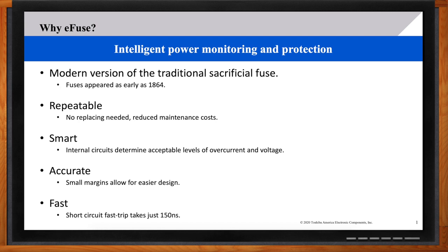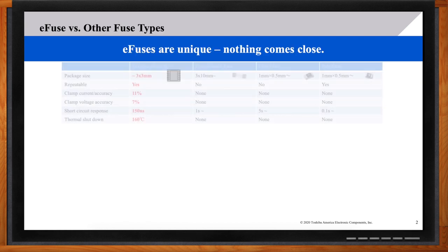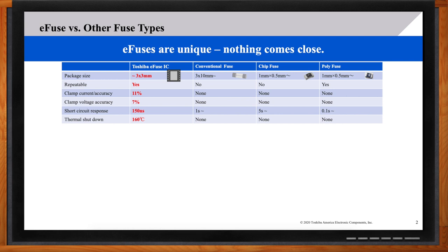How do e-fuses compare with other types of fuses I might be familiar with? You're really going to see three types of other fuses. A conventional fuse, a glass filament type fuse. A chip fuse, which is definitely a lot smaller. And then also a poly fuse, which is a bit more complex, but still not in the level of Toshiba's e-fuse IC. A conventional fuse is not repeatable. It blows, it's done. Same with the chip fuse. Poly fuse is a little different and it can repeat, but none of them actually have clamping current accuracy or clamping voltage accuracy.